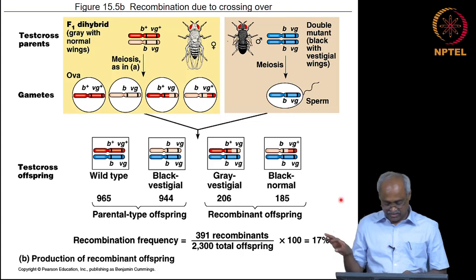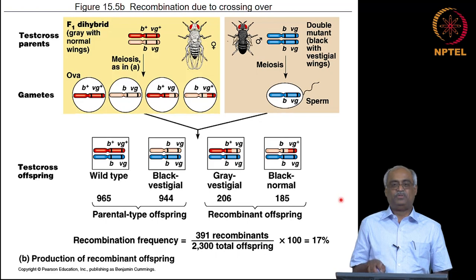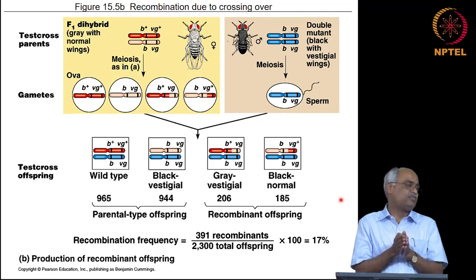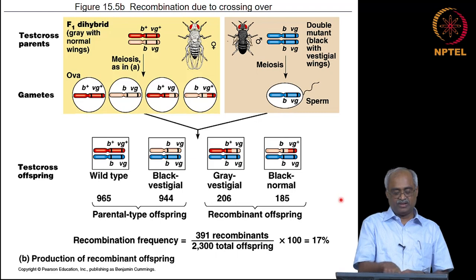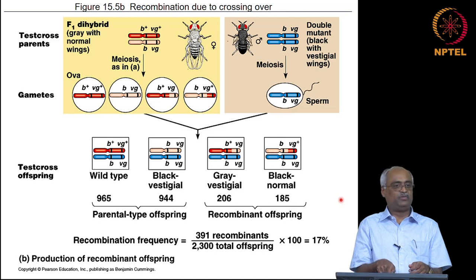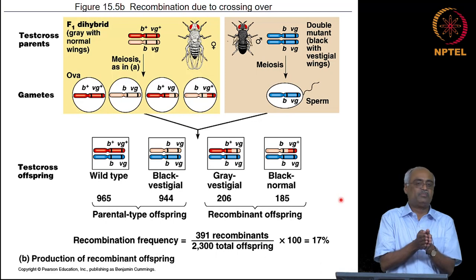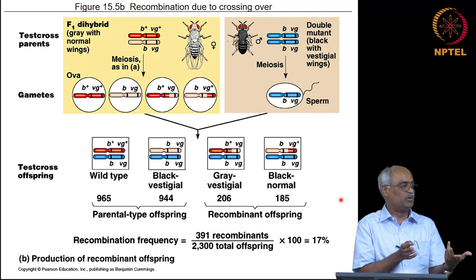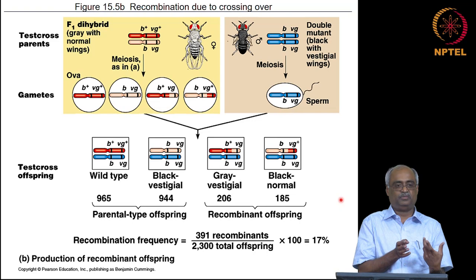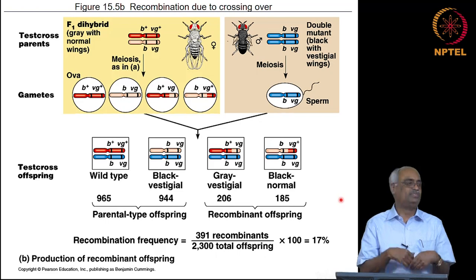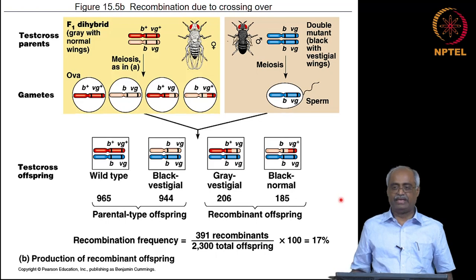Muller and other students of Morgan proposed that if genes are closer together on the chromosome, recombination frequency is likely to be lower, assuming crossover can occur anywhere along the chromosome length. If two loci are farther apart, the probability of a crossover occurring between them is higher. This means recombination frequency is a function of the distance between two loci — and this is the basis for genetic mapping.